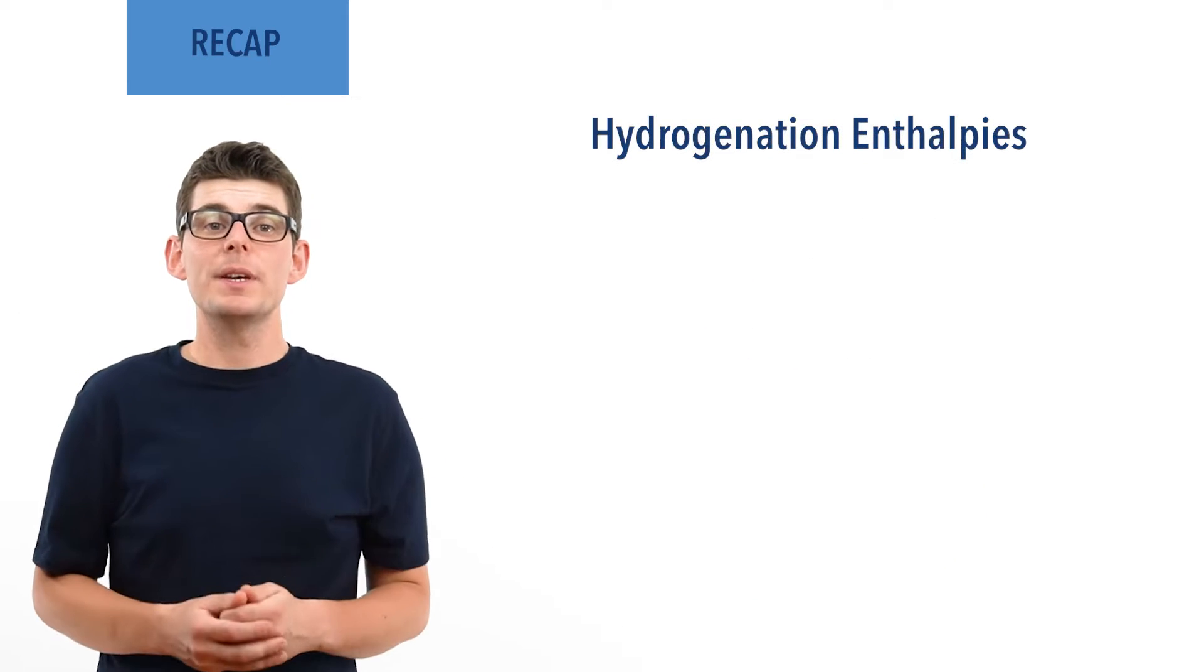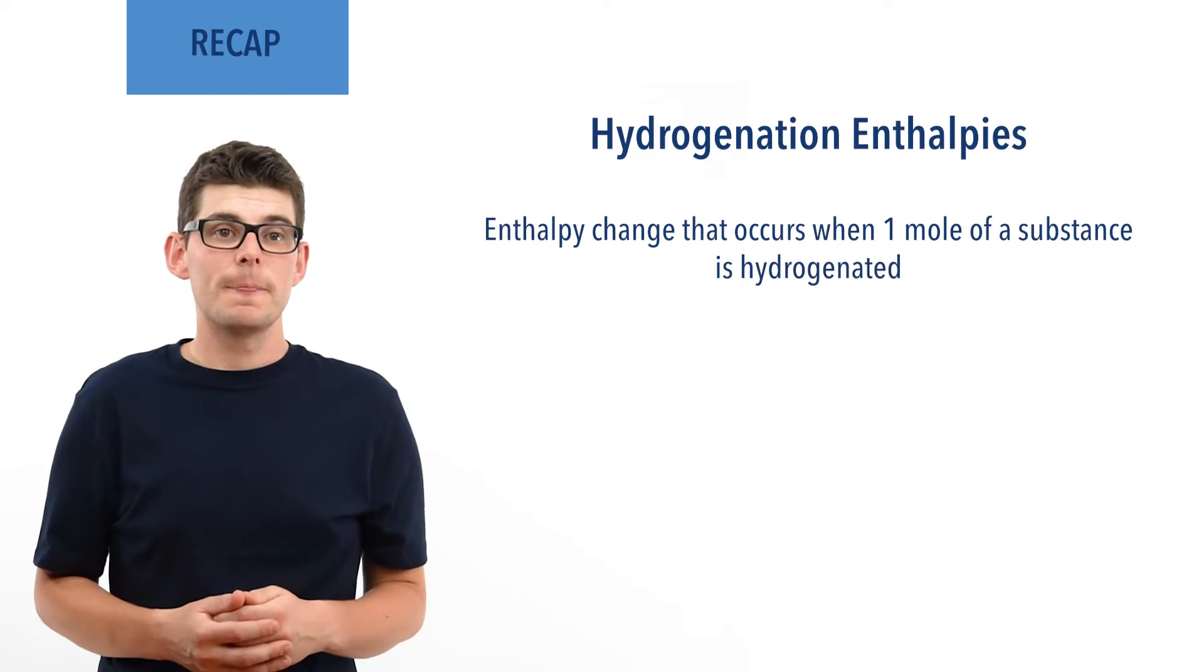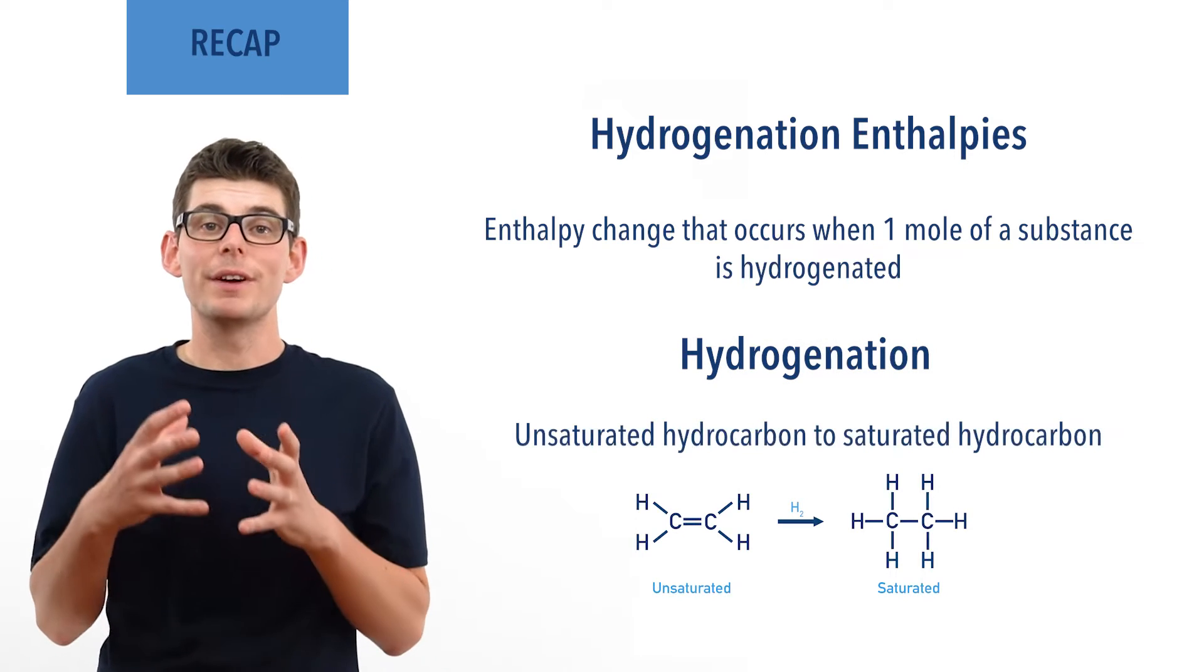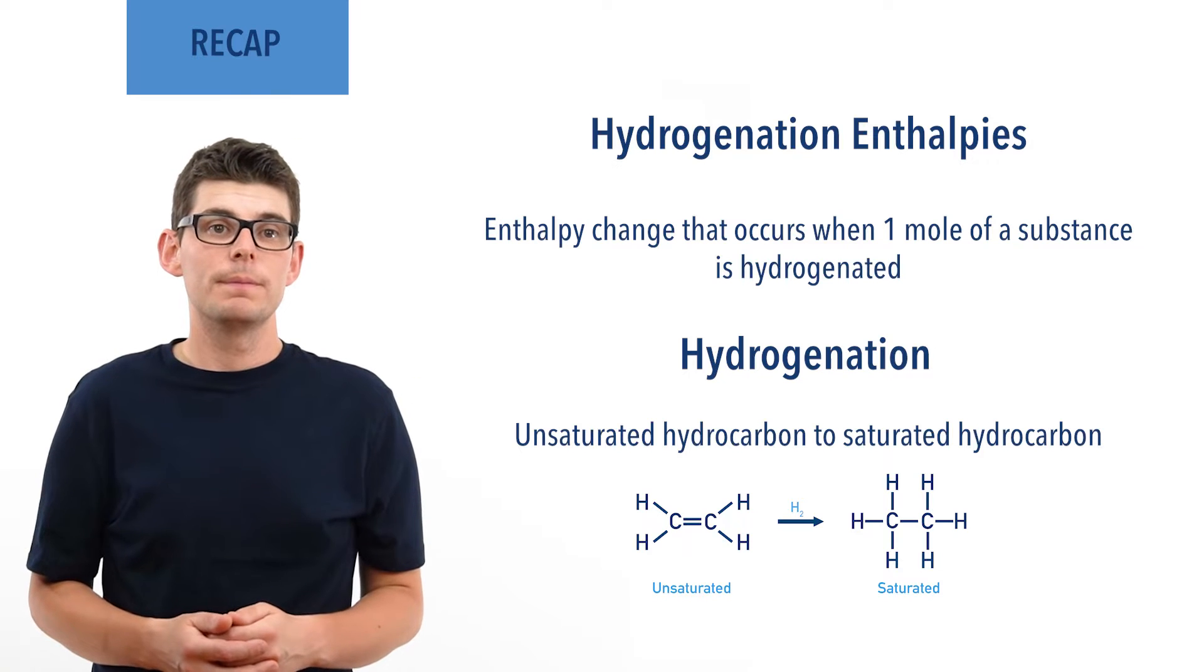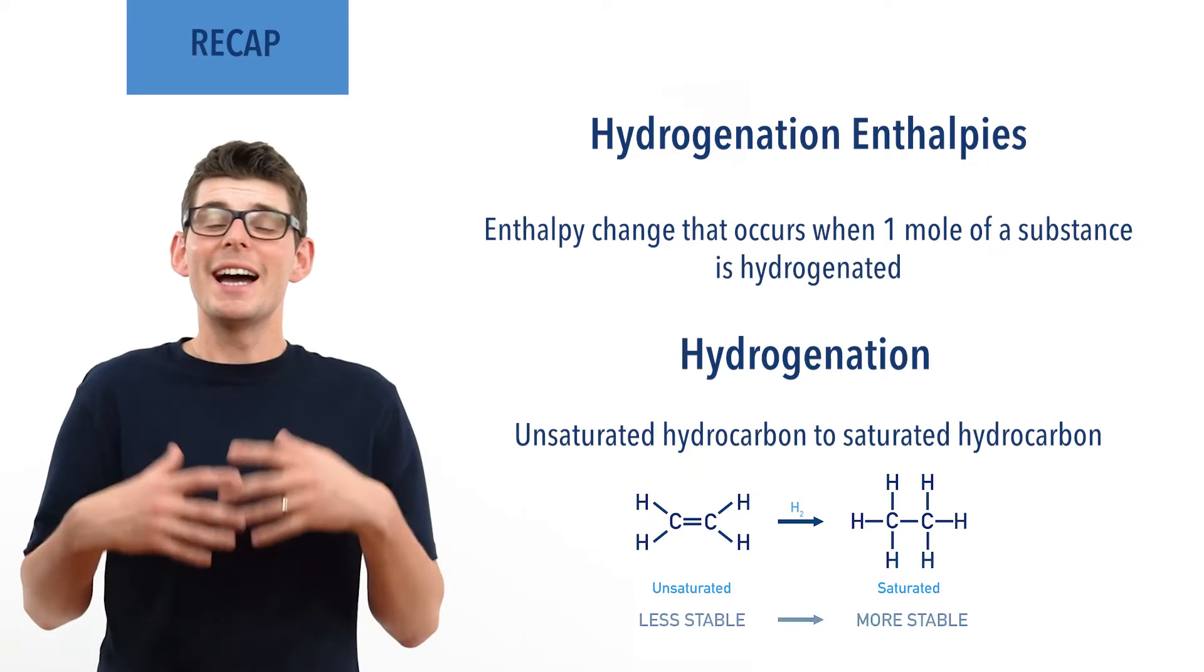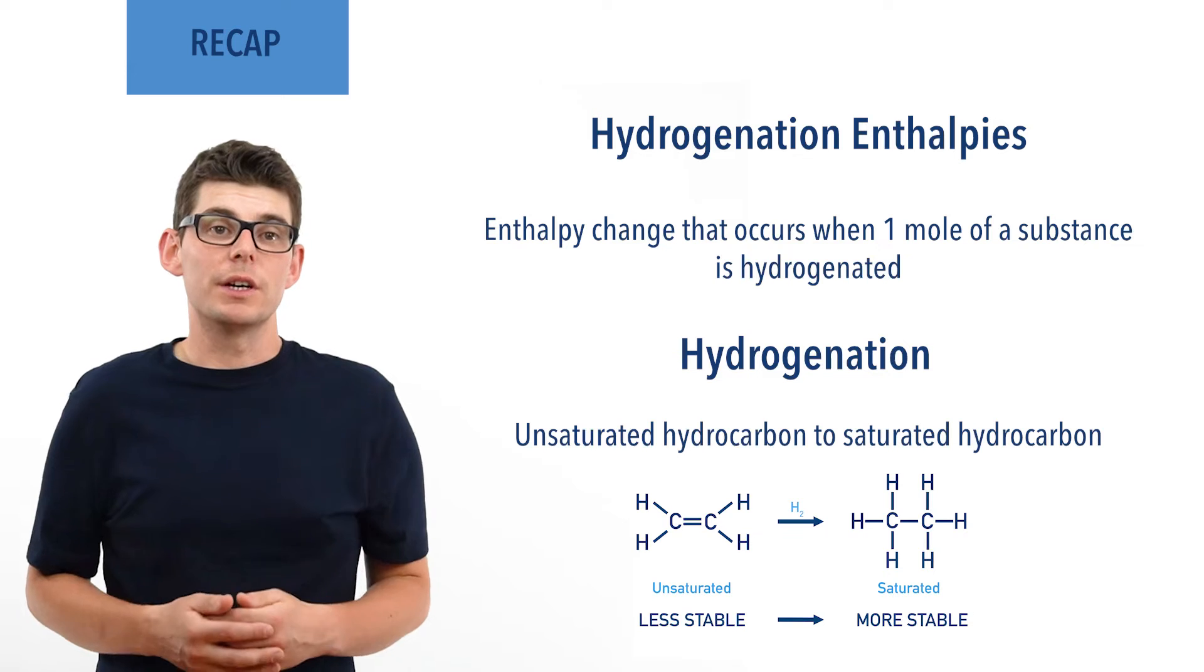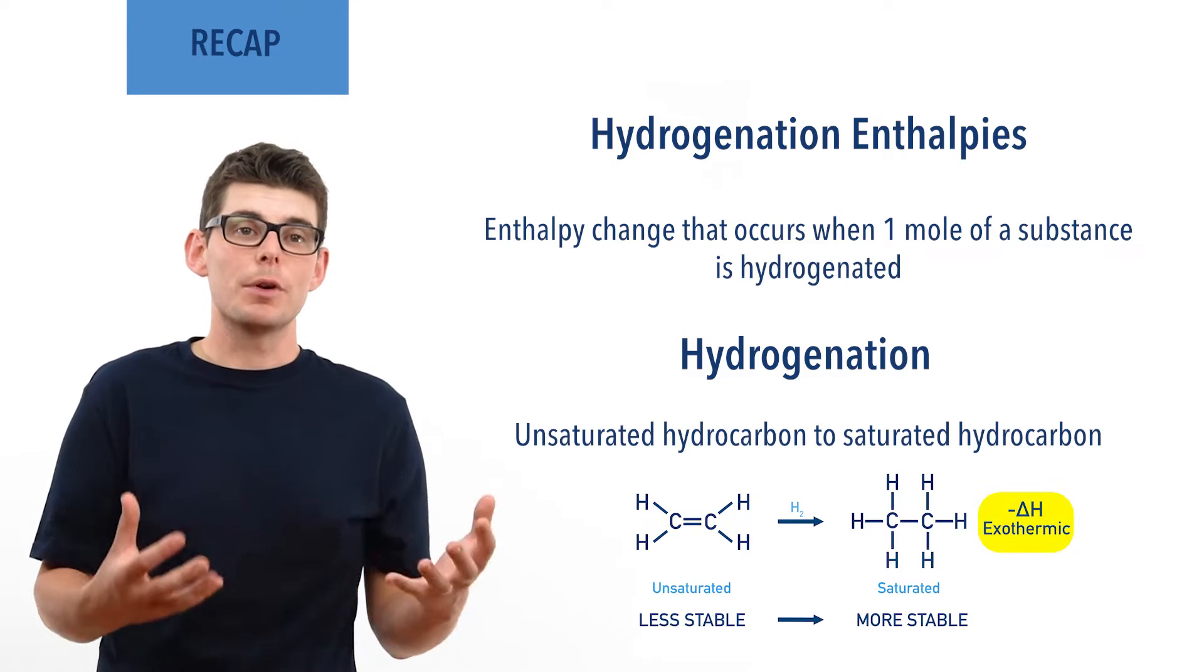Hydrogenation enthalpies refer to the enthalpy change that occurs when a molecule is hydrogenated. Hydrogenation means adding hydrogen atoms to an unsaturated hydrocarbon, forming a saturated hydrocarbon. Now hydrogenation enthalpies are always negative, as saturated hydrocarbons are more stable than unsaturated hydrocarbons, making hydrogenation an exothermic process.